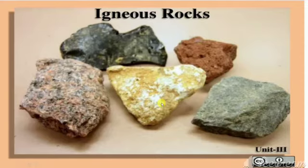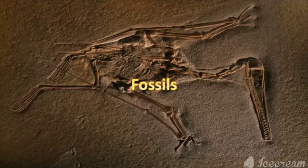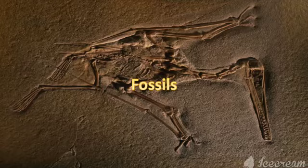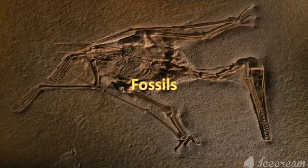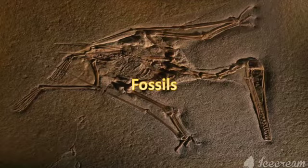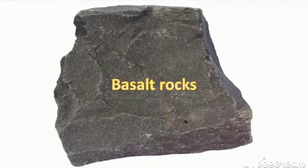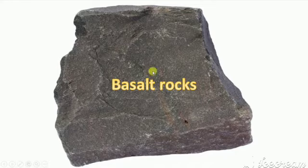These rocks are heavy, and we do not get fossils in them. Fossils are the remains or impressions of prehistoric plants or animals embedded in rocks and preserved in petrified form. The Maharashtra Plateau and the Sahyadris are made of igneous rocks. Basalt is a major example of igneous rocks.